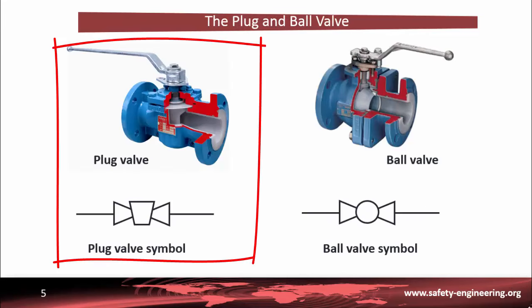A plug valve is a quarter-turn rotational motion valve that uses a tapered or cylindrical plug to start or stop flow. The name comes from the shape of the disk, which looks like a plug. In the open position, the plug passage is aligned with the inlet and outlet ports of the valve body. If the plug is rotated 90 degrees from the open position, the solid part of the plug blocks the port and stops flow.